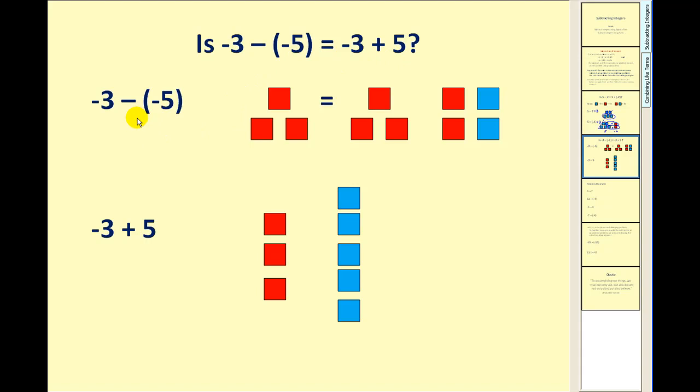Now this example is a little more involved. Here's our model for negative 3. Well if I have negative 3, I can't take away 5 red squares because I only have 3 of them. So what we have to do is introduce some zeros. This is what I mean by that.